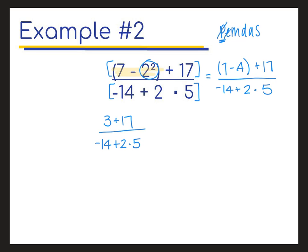There's no longer any exponents. Now I'm looking for multiplication or division from left to right. So on my numerator, there's nothing. So I'm just going to copy that down. On the denominator, I do have multiplication here. So I have negative 14 plus, and then 2 times 5 is 10.